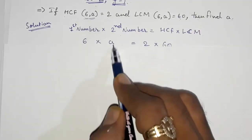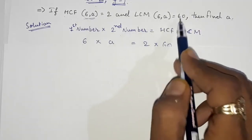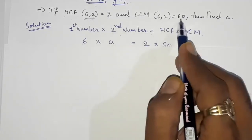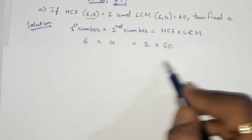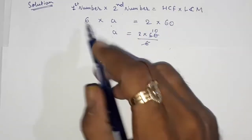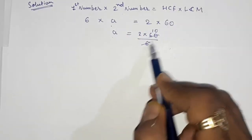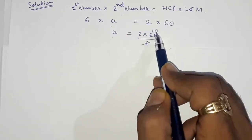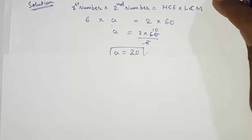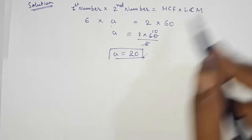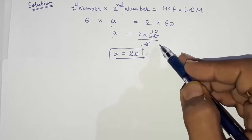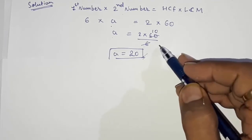Putting the values in: 6 × a = 2 × 60. We take 6 to the denominator: a = (2 × 60) / 6 = 120 / 6 = 20. So a = 20. This is how we find a.